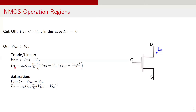Here, the drain current ID increases linearly with VDS. On the other hand, if VDS is more than or equal to VGS minus threshold voltage, the NMOS enters saturation region. In this region, the drain current ID does not depend on VDS. The current attains a maximum value for a given gate voltage. The drain current is computed as mu_N * C_ox * (W/L) * (VGS - VTN)^2.